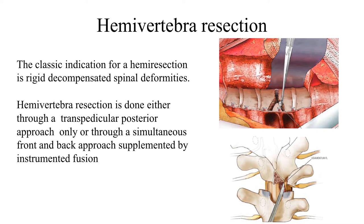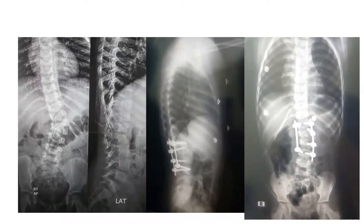Hemivertebral resection is a corrective surgery aiming at resecting the hemivertebra and correcting the deformity. The classic indication is rigid decompensated spinal deformities. These procedures used to be done through anterior surgery either by thoracotomy or laparotomy, but nowadays they are increasingly done through an all-posterior procedure with complete resection of the vertebral body from behind and instrumentation above and below the resection area.